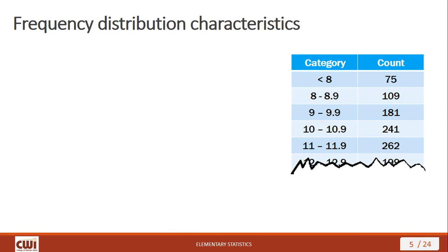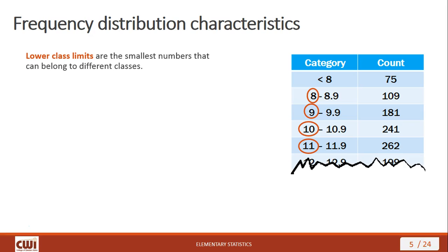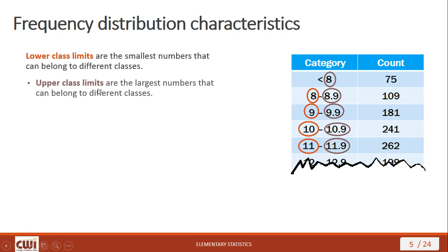Frequency distributions have certain set characteristics. The first characteristic is the lower class limits — these are the smallest numbers that can belong to any of the different classes or bins. The number listed first in each category is your lower class limit. Next we have upper class limits — these are the largest numbers that can belong to different classes. Notice how there's no lower class limit for the first category: the first category is simply anything lower than 8, which could go all the way out to negative infinity.